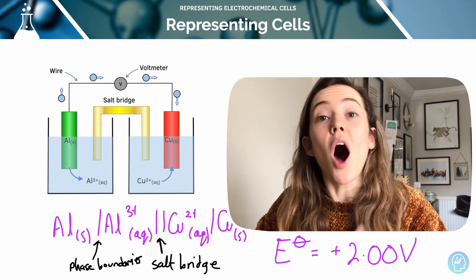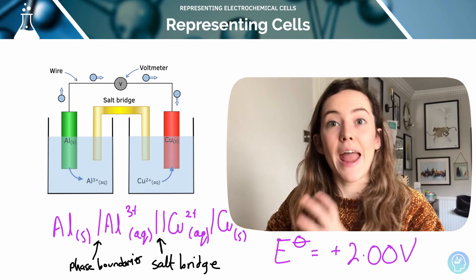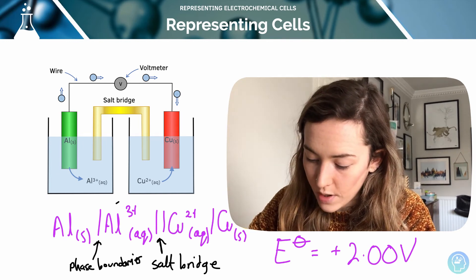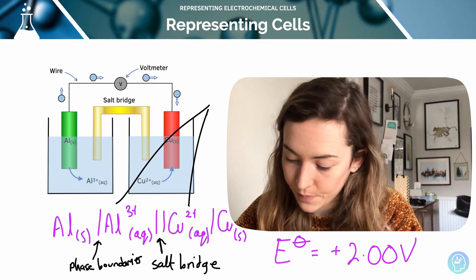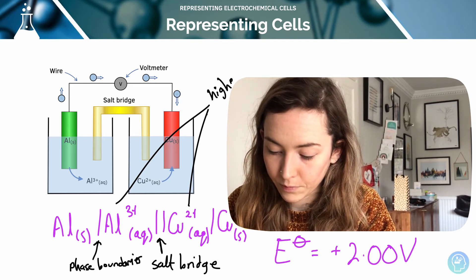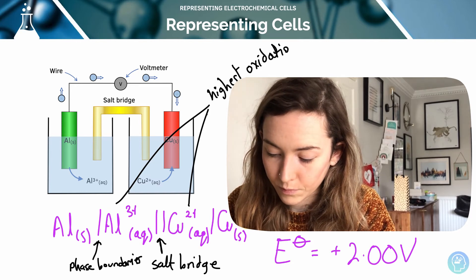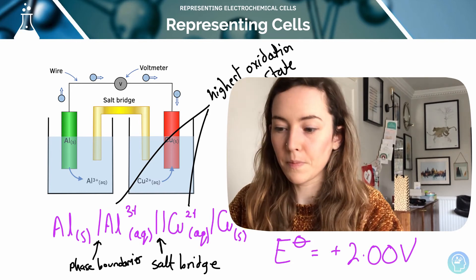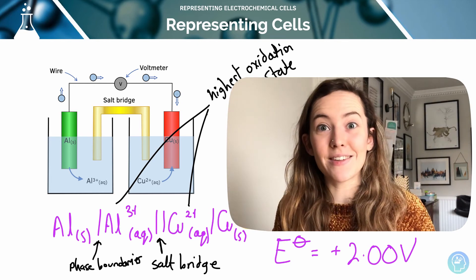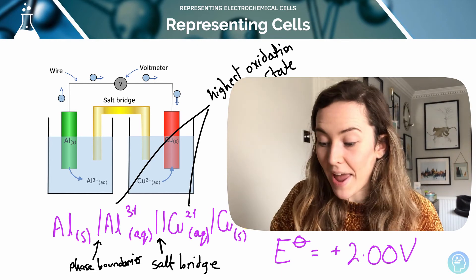And the species with the highest oxidation state in the redox couple is written closest to the salt bridge. And we always show the half cell with a more negative standard electrode potential on the right hand side.